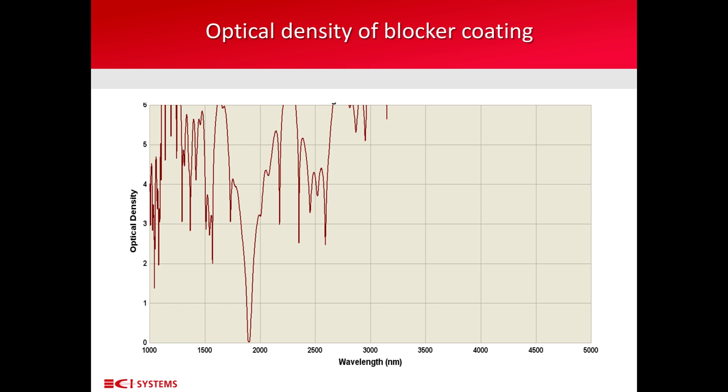It's very low because the transmittance is very high. But outside the range of about 1,800 to 2,000 nanometers, the optical density is very high, even three orders of magnitude higher than at the peak wavelength. This means that the transmittance outside that region is very low, down to the order of a tenth of a percent. So, this shows how the blocker filter works.